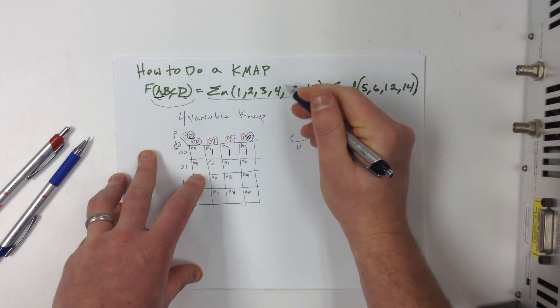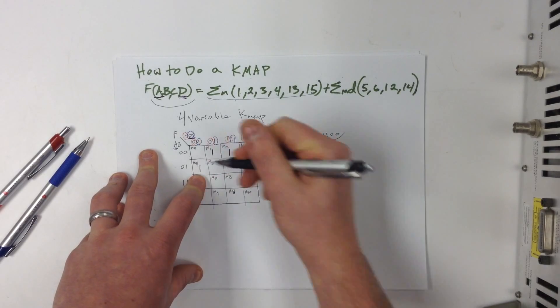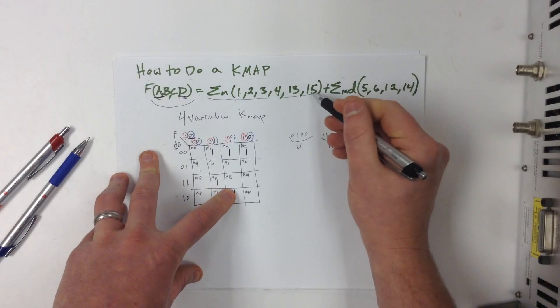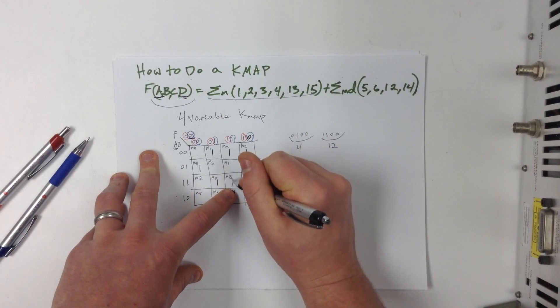We have minterm 3, we're going to put a 1 in minterm 3. Then we have minterm 4, we're going to put a 1 in minterm 4. Minterm 13, we're going to put a 1 in minterm 13. And then minterm 15, we're going to put a 1 in there.